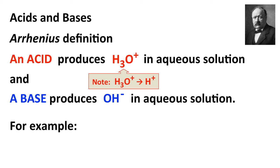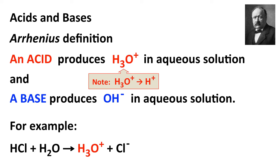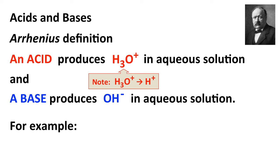A couple of examples. HCl is a gas; when it dissolves in water, it produces H3O+, hydronium ion, as well as chloride. And producing H3O+ is what makes HCl an Arrhenius acid.